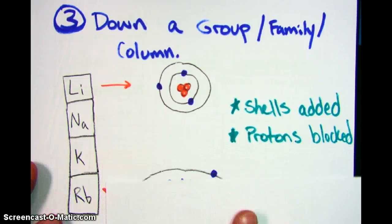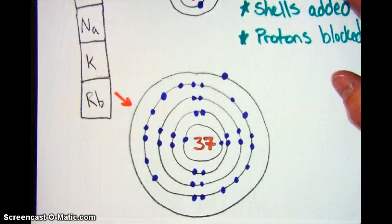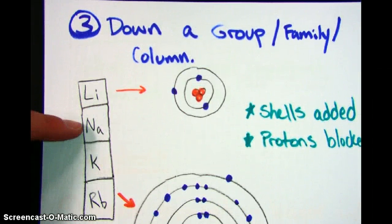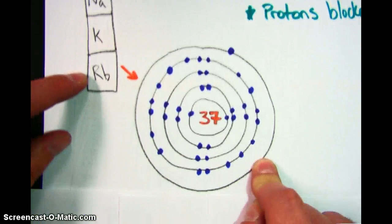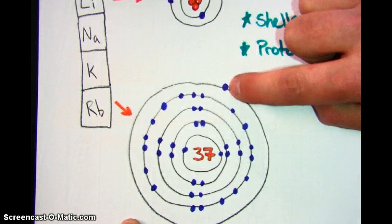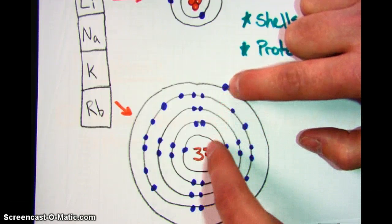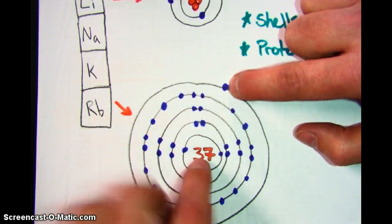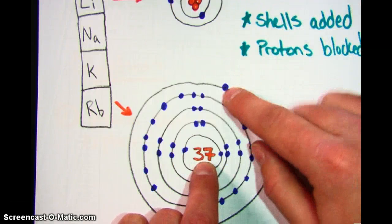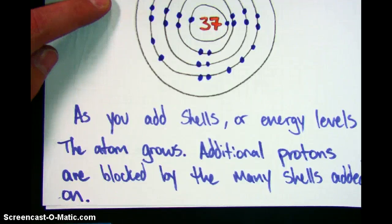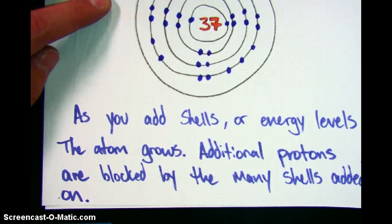Let's take a look at rubidium. Rubidium is way, way bigger, and that's because we've added a lot more rings. We were at two rings on lithium, sodium has three, potassium has four, rubidium has five rings. But think about that one outside electron — think about all of the electrons it has to see through in order to see the protons on the inside. Because there are all these electrons blocking its view, even though there are 37 protons in the center, they're having a harder time pulling on that outer electron. So in summary, as you add shells or energy levels, the atom grows. Additionally, protons are blocked by the many shells you add on, which allows it to be bigger than you might think.